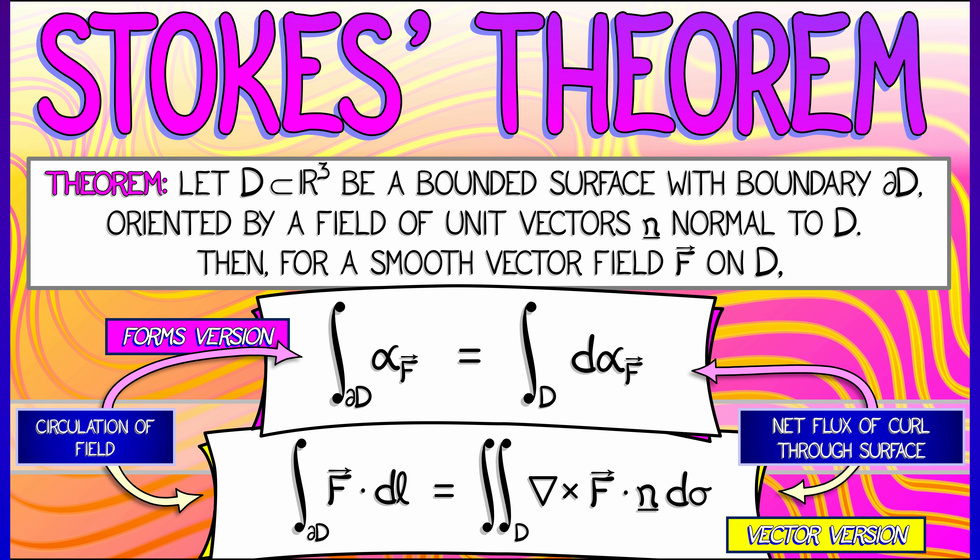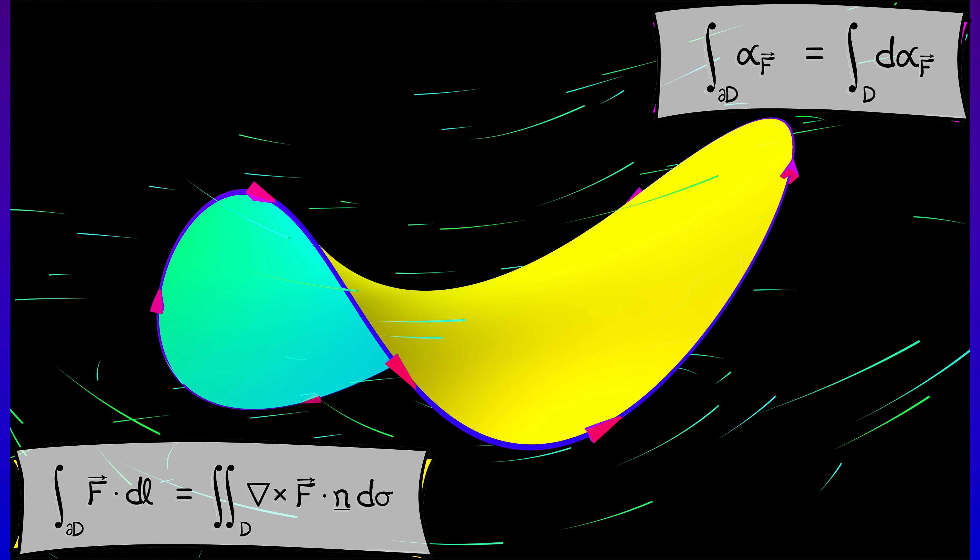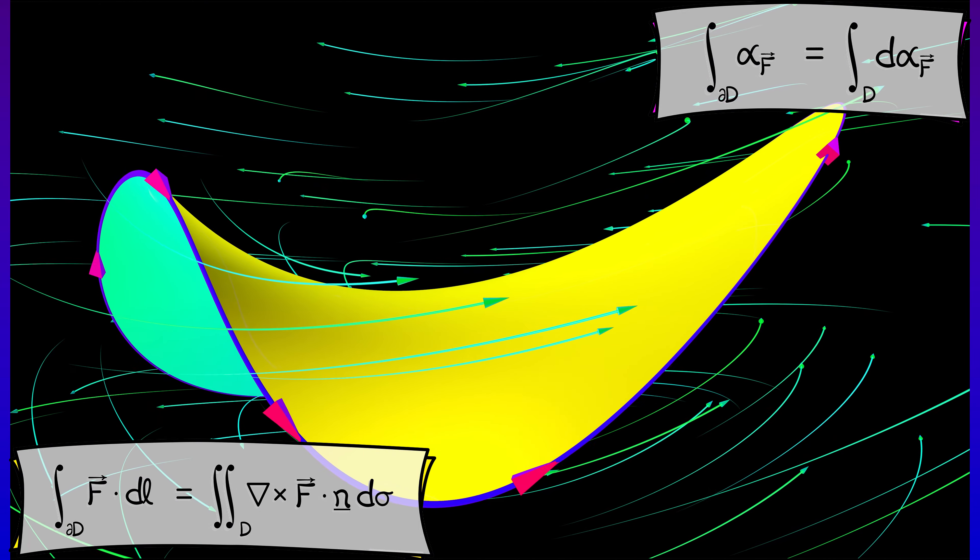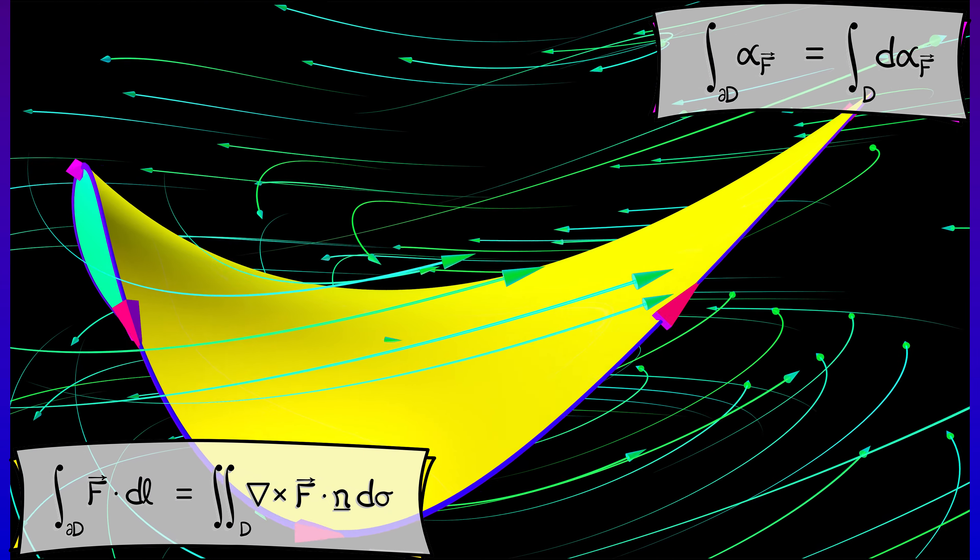Okay, now that's what Stokes theorem says. Those are the formulae. But what does it look like? What does it feel like? You have to be able to go back and forth between the vector field that is spinning around, causing some circulation along the boundary, and the curl of the vector field, a totally different vector field that is measuring the infinitesimal circulation, the infinitesimal spin of your original vector field F.